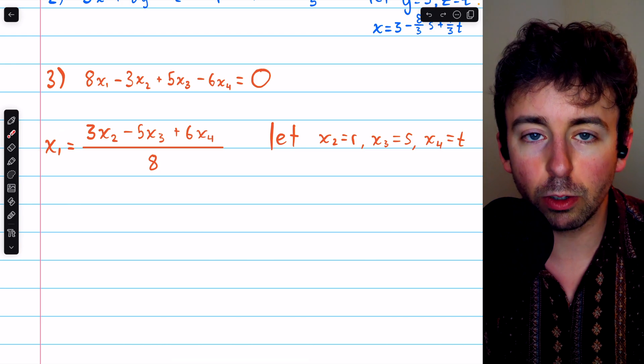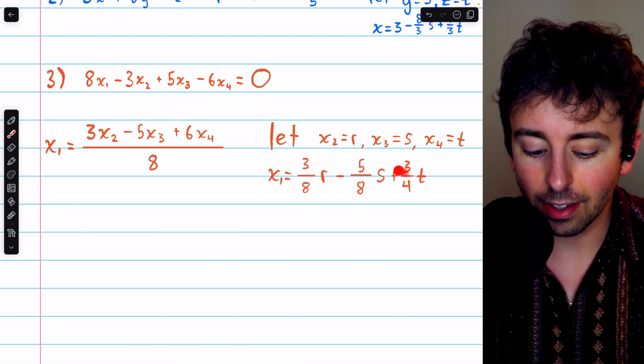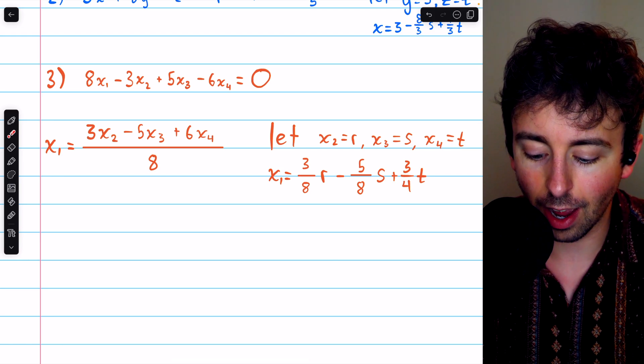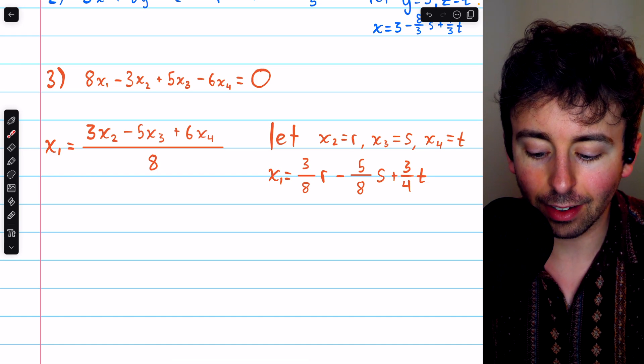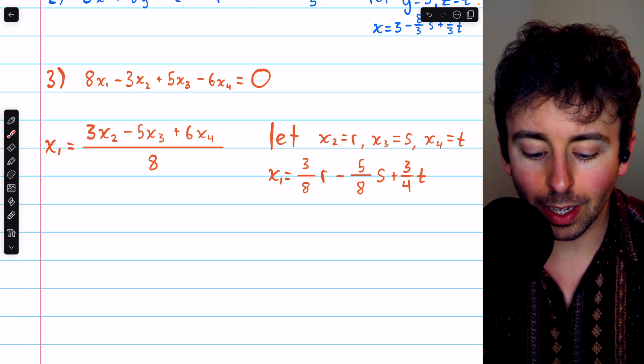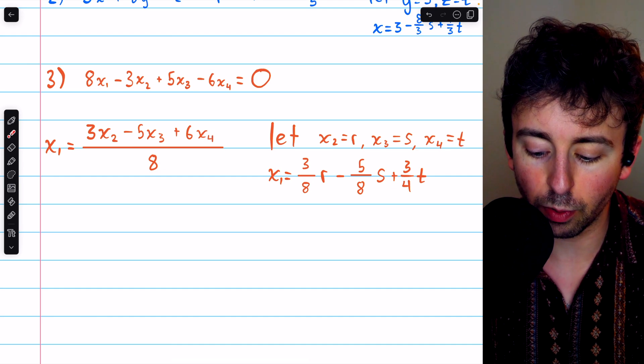Then, again, we can rewrite x1 in terms of these parameters. And it looks like this. Splitting up the fraction, we have 3 eighths times x2, which is r, minus 5 eighths x3, which is s, plus 6 eighths, that's the same as 3 fourths, times x4, which of course is t.